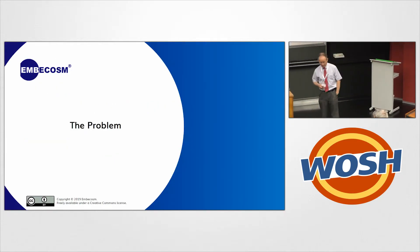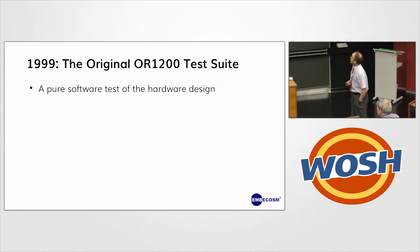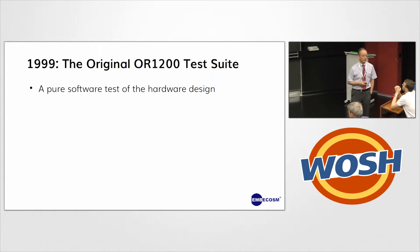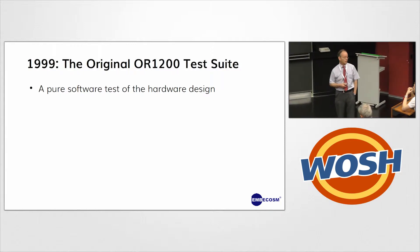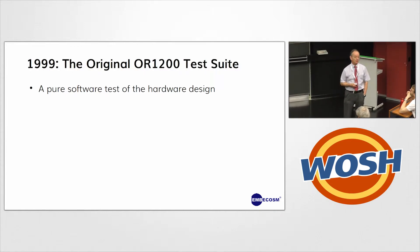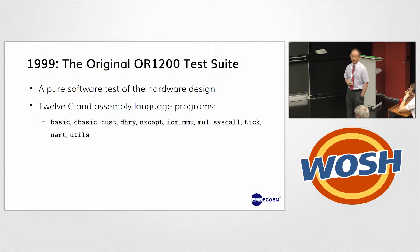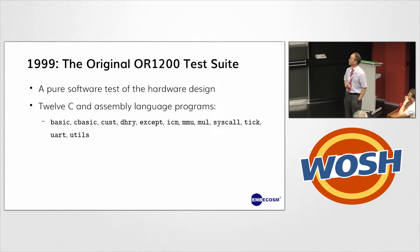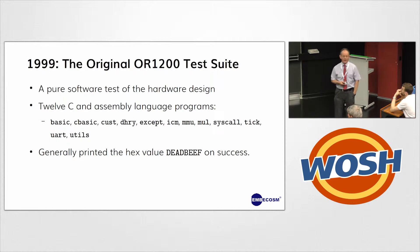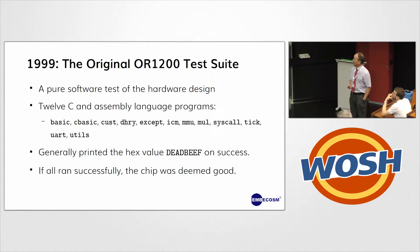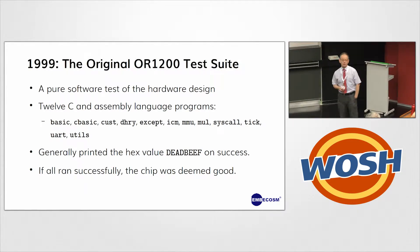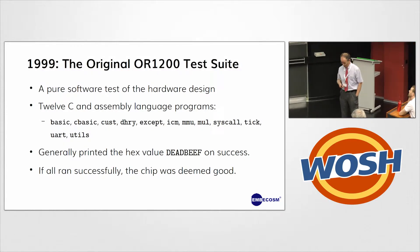What's the problem? I want to tell you a story which will show how long I've been in this game. In 1999, the project to create the OpenRISC 1200 — the first really serious attempt to do an open source processor platform — relied purely on software to check that the chip was good. It had 12 little programs. You may think the programs in mBench are small — they're not as small as these ones. Those programs worked by generally printing out DEADBEEF on success, and if you got 12 DEADBEEFs printed, the chip must be perfect. That was how OpenRISC, which was used in the very early versions of PULP, was verified.